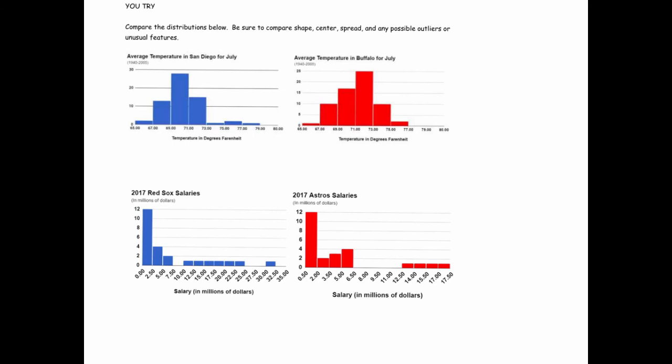All right, so here are two examples you can try on your own. Just compare the distributions below, compare the shape, center, spreads, and any possible outliers. The first example compares the average temperatures in July for two cities, San Diego and Buffalo. And those are between the years 1940 and 2005. And the second example compares the 2017 Red Sox and Astro salaries. And those are in units of millions of dollars. So see if you can use the language of statistics to compare shape, center, spread, and any possible outliers.